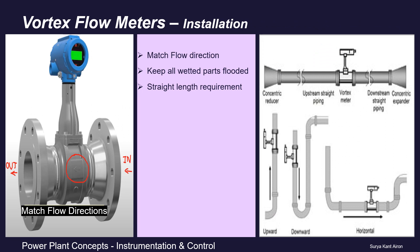For installation, first, similar to other flow meters, the flow direction marked on the meter must match the process flow direction. Second, all wetted parts must be kept flooded — vortex flow meters can be installed vertically, horizontally, or at any angle as long as they remain fully flooded for accurate measurement. Third, maintain at least the minimum manufacturer-recommended straight pipe length upstream and downstream of the flow meter to avoid flow turbulence from pumps, valves, bends, and tees.